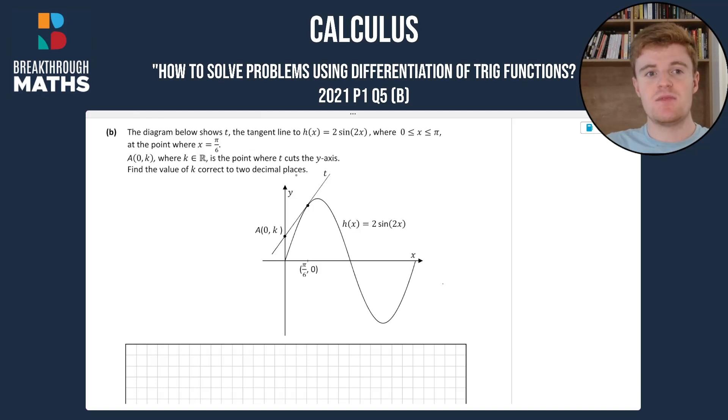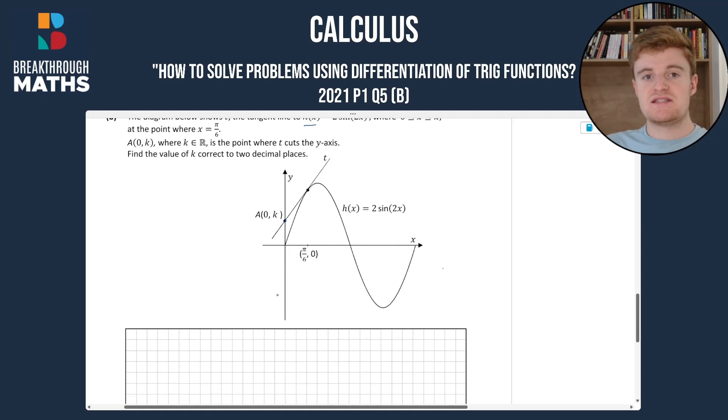So in this question we're told the diagram below shows t, the tangent line to h(x) = 2sin(2x), so this trig function here is 2sin(2x) and the point (0, k) here, we're asked to find the value of k. So we're going to do this in a few steps.